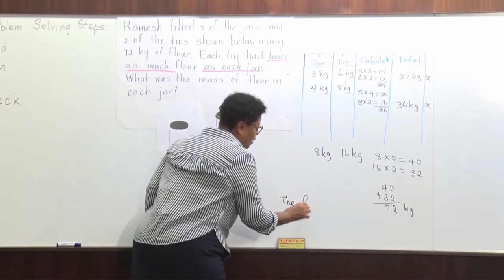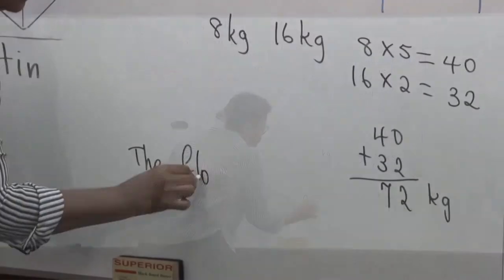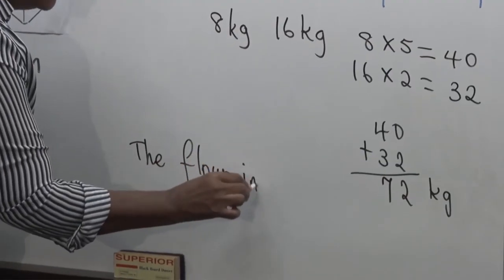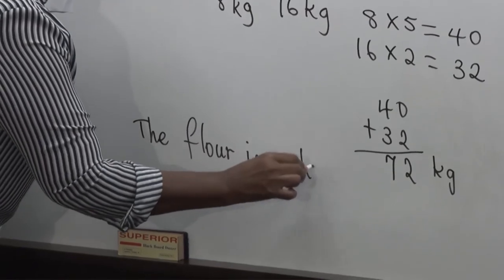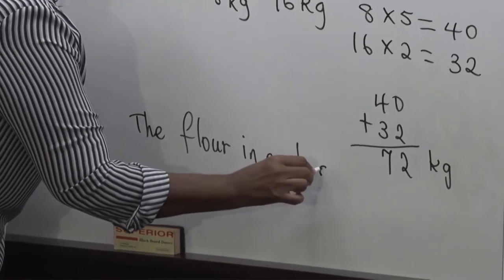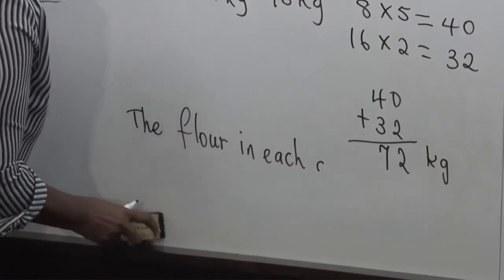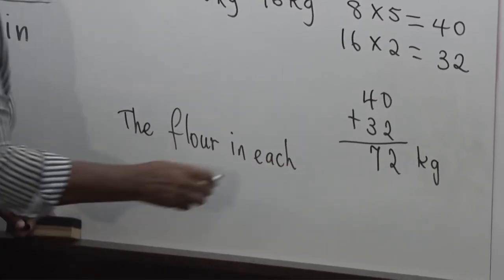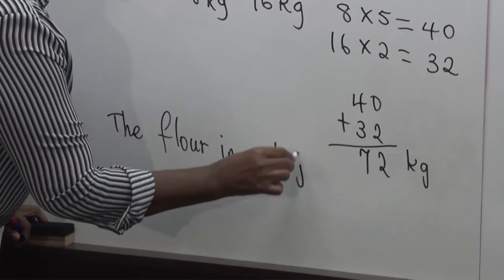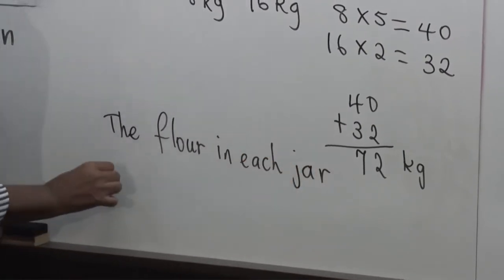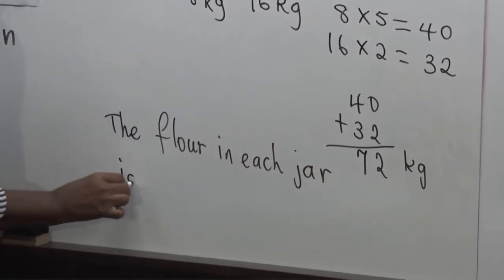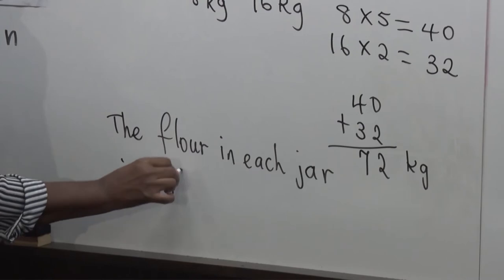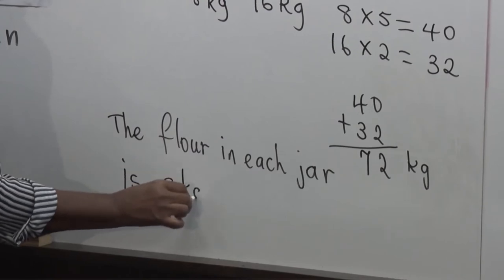The question asks: what was the mass of the flour in each jar? The flour in each jar was 8 kilograms.